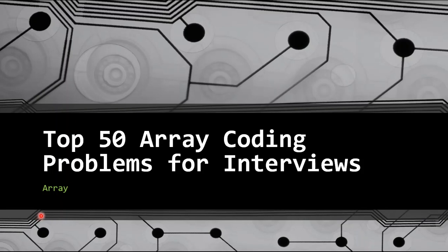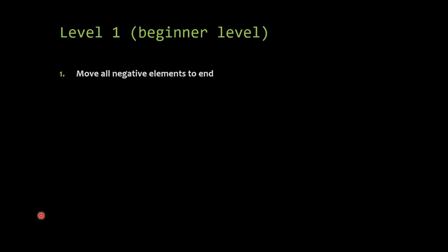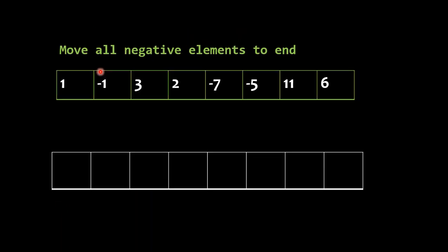Hello guys, welcome back to the channel. Let's start with today's topic which is 'move all the negative elements to end.' So what this means - you will be given an array consisting of negative and positive numbers, like 1, -1, 3, 2, -7, -5, 11, 6 arranged in random order. What we have to do is make all the negative numbers go to the end, or the right side.